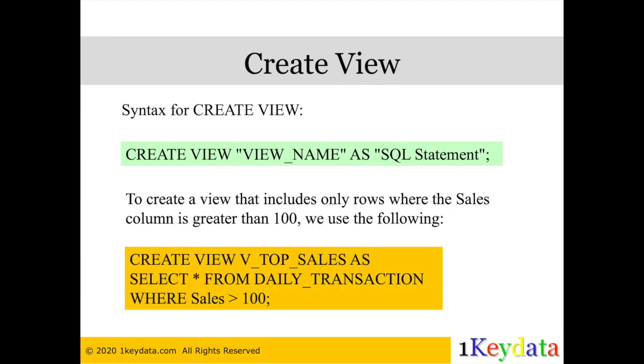As an example, let's say you want to build a view on top of a table called daily_transaction, and you only want to include the rows where the sales column is greater than 100. To do this, you type in CREATE VIEW v_top_sales AS SELECT * FROM daily_transaction WHERE sales > 100.